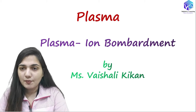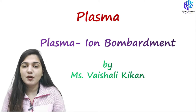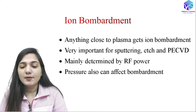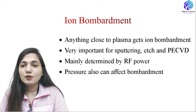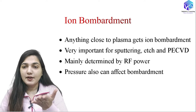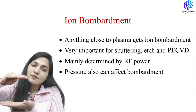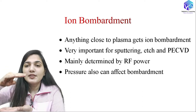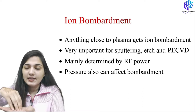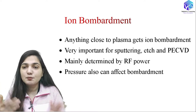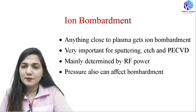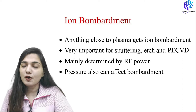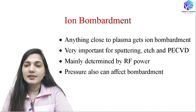Now coming to ion bombardment — today we are going to see how ion bombardment is generated from the plasma. Anything which is closer to the plasma will get ion bombardment. In the plasma we have electrons and ions, and these electrons and ions will be hitting the surface below it. This process is called ion bombardment.